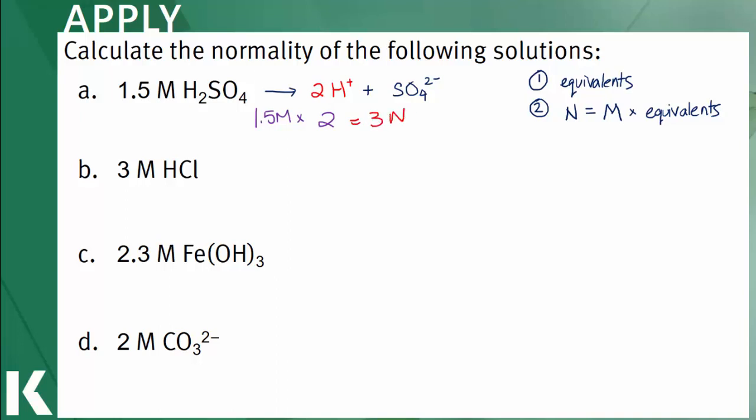In B, hydrochloric acid is a strong acid and will dissociate in solution to donate one molecule or equivalent of hydrogen ion. A concentration of 3 molar multiplied by 1 equivalent will equal 3 normal. Notice, for monoprotic acids like hydrochloric acid, the molarity will equal the normality.